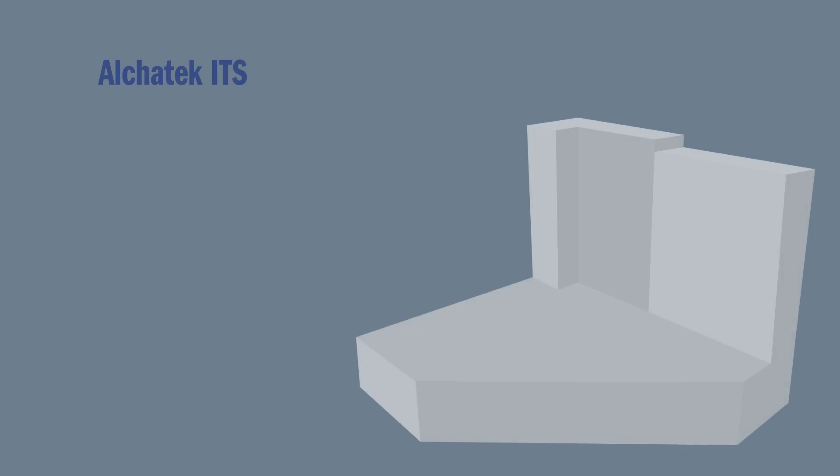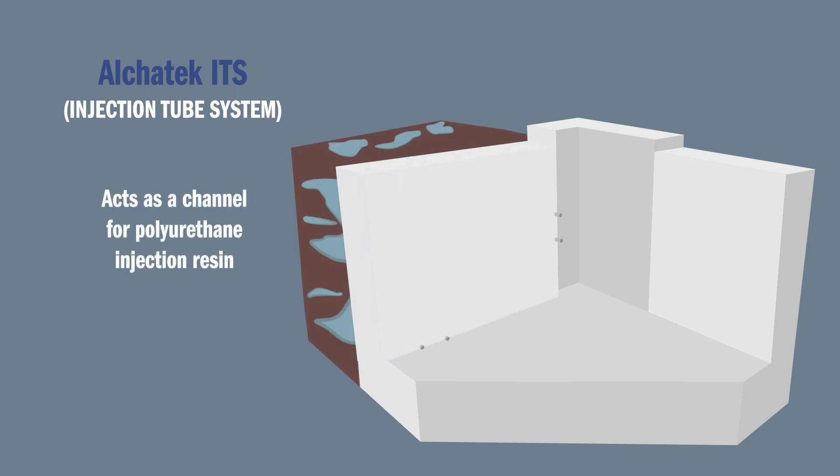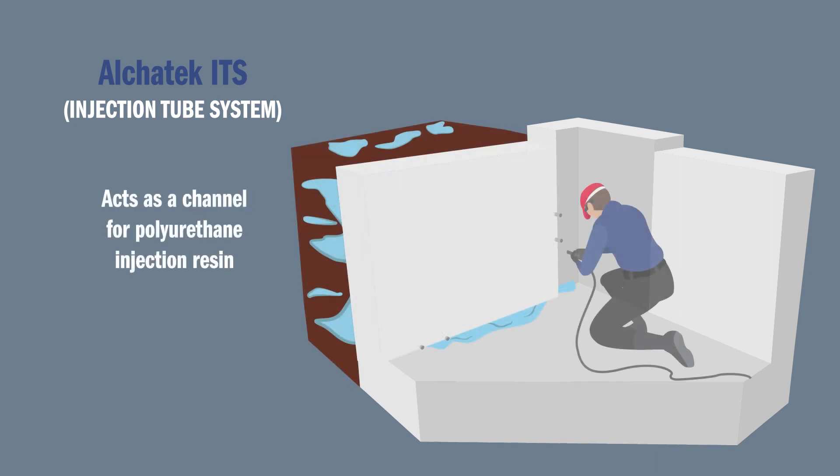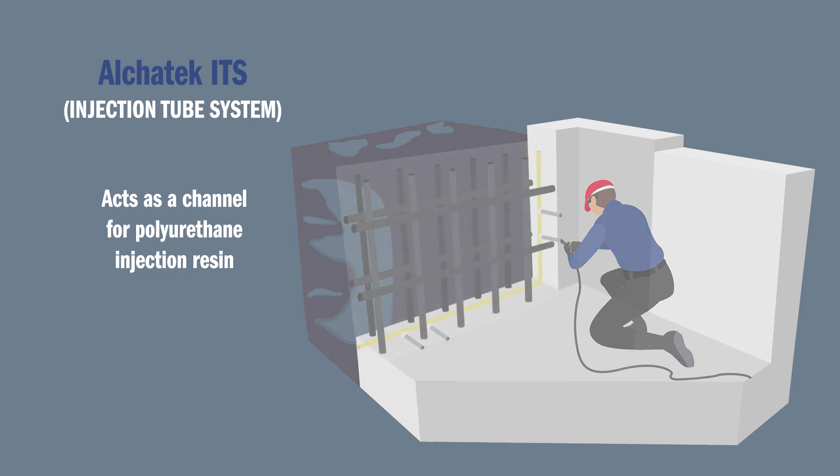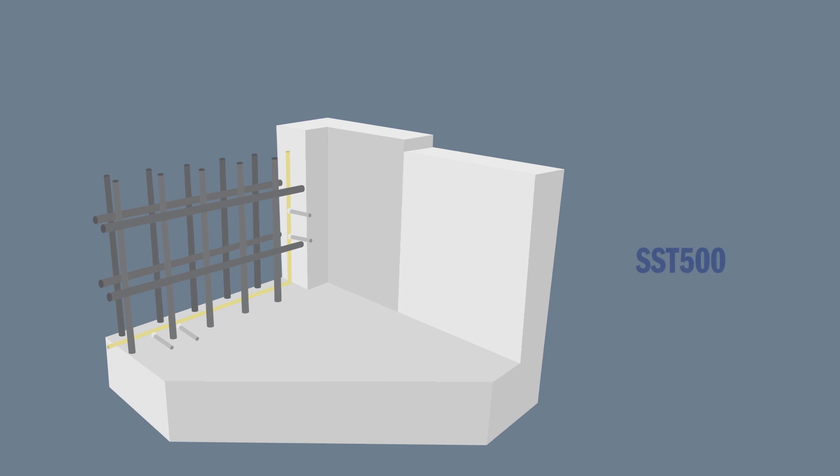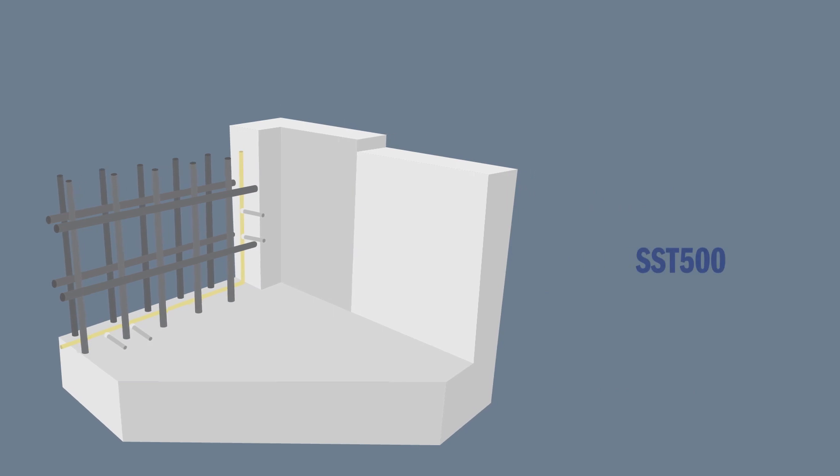Alchatek's ITS or injection tube system simplifies the injection of construction joints with polyurethane resin. The tube system is placed in the middle of the joint between the two sets of rebar during construction. Should leaks occur after construction, it acts as a channel for the polyurethane injection resin. It can be combined with other preventative waterproofing systems like the SST500 or PVC water stops.